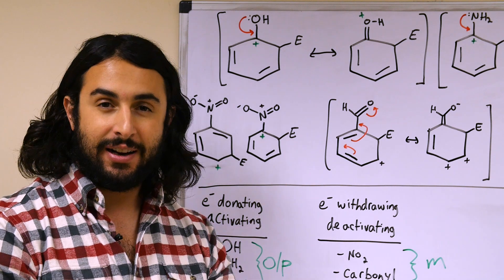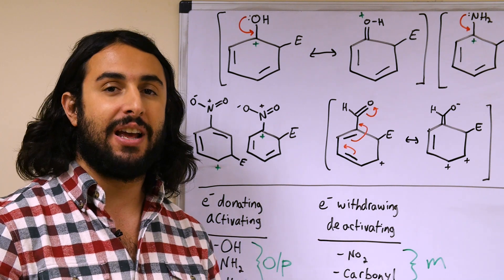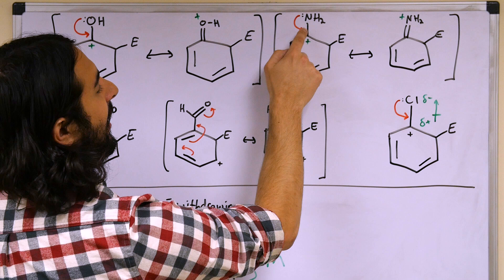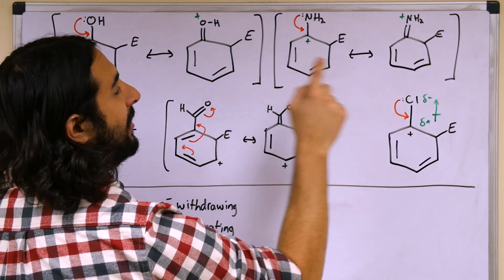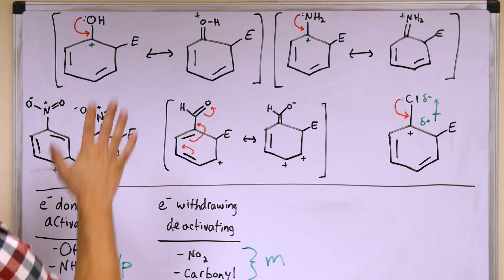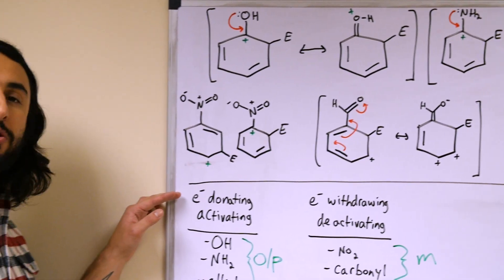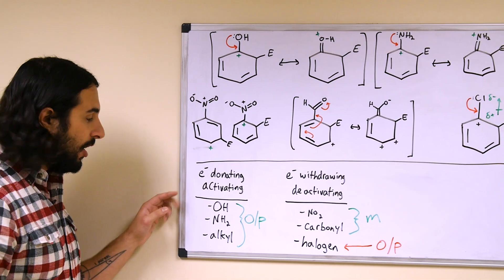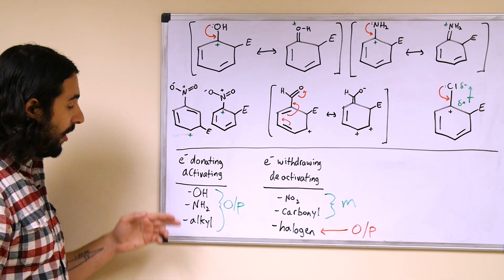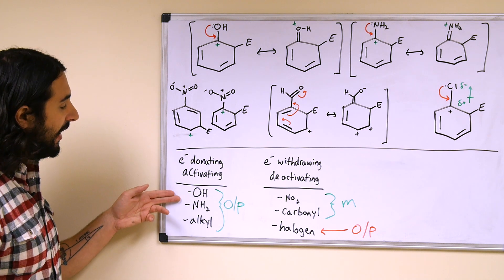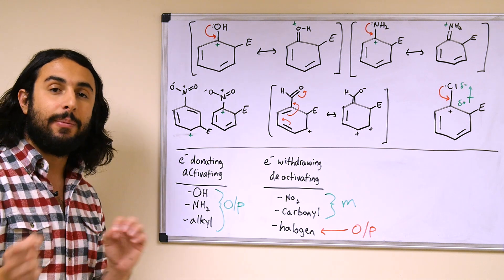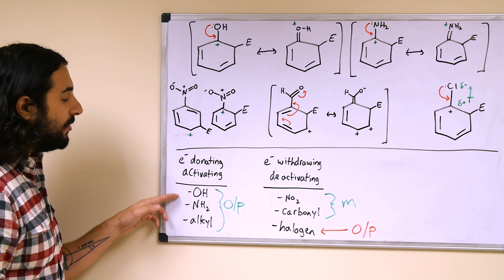An amino group — nitrogen has a lone pair — can donate through resonance to directly stabilize the carbocation. So the electron donating and activating groups are hydroxyl, amino, and alkyl. Hydroxyl and amino are more strongly donating and activating than alkyl because they donate a lone pair directly by resonance, rather than through hyperconjugation. If competing, lone-pair donors will direct more strongly than alkyl groups.